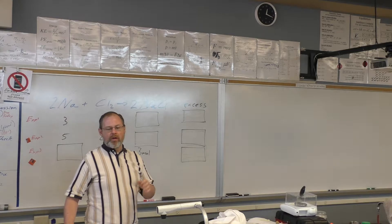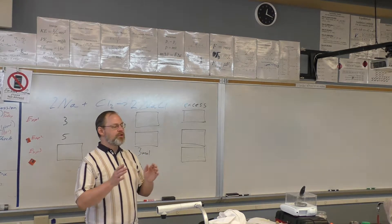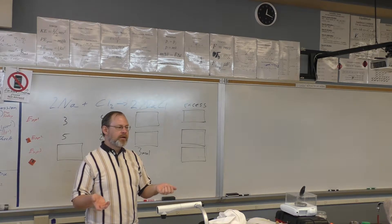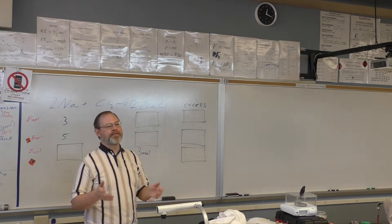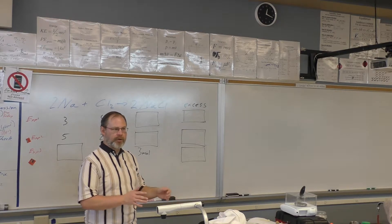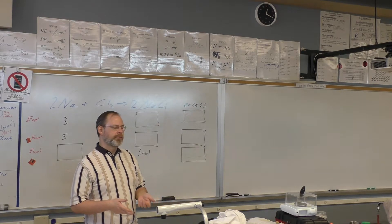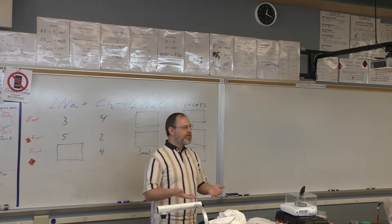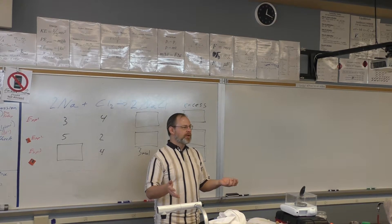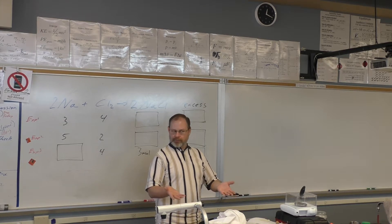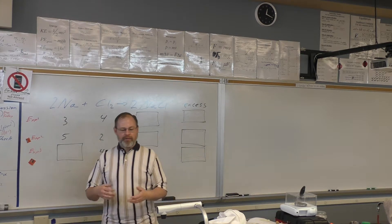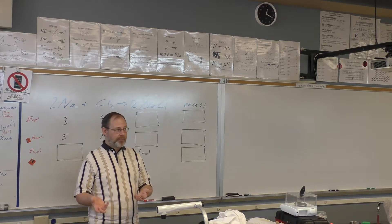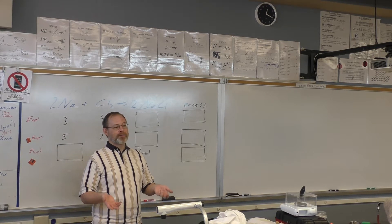It's important to first understand that you cannot have a fraction of a molecule. In the simulation it's always molecules, so there's always whole numbers of molecules. Once we switch gears to moles, you can have fractions of moles, because the mole is just a number — like a gigantic dozen. So you can have a fraction of a dozen. You can't go to the store and ask for a fraction of an egg, but you can go to the store and ask for half a dozen.